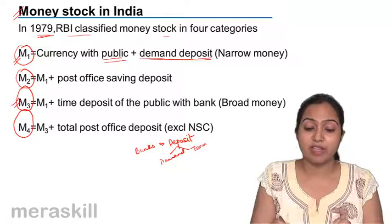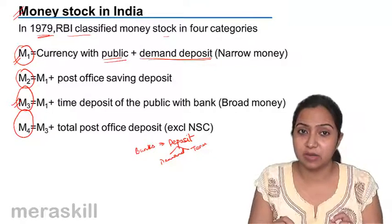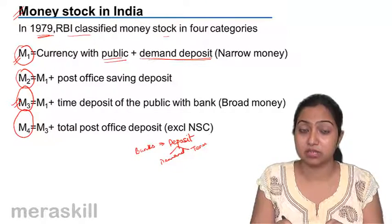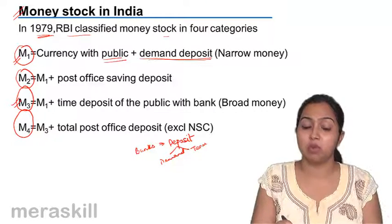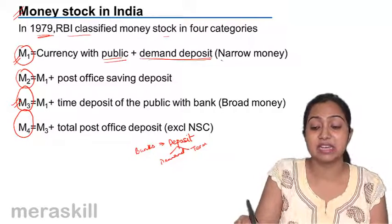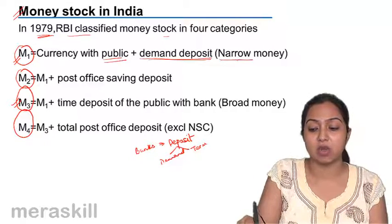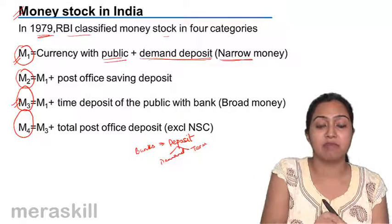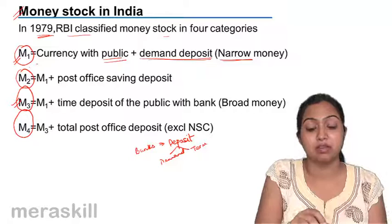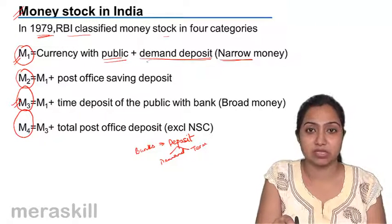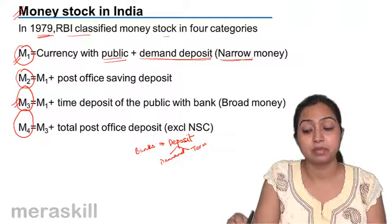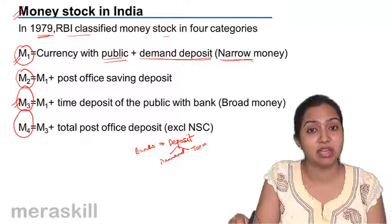When we talk about only currency with the public plus demand deposits — that is the money we can get any moment we want — it is called narrow money or M1, which means currency with the public plus demand deposits.